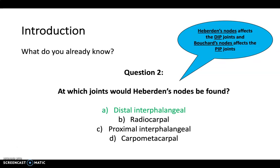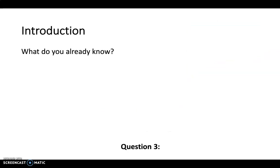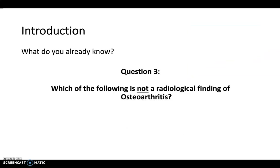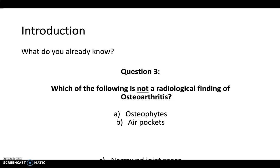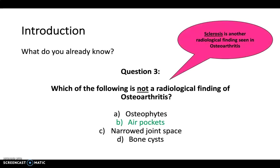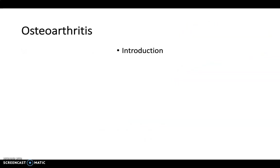Bouchard's nodes affects the proximal interphalangeal joints. Finally, which of the following is not a radiological finding of osteoarthritis — osteophytes, ear pockets, narrow joint space, or bone cysts? The answer is B. The other radiological finding to look out for with osteoarthritis is sclerosis. Don't worry if you didn't know the answers — we're going to revisit them at the end of the video.